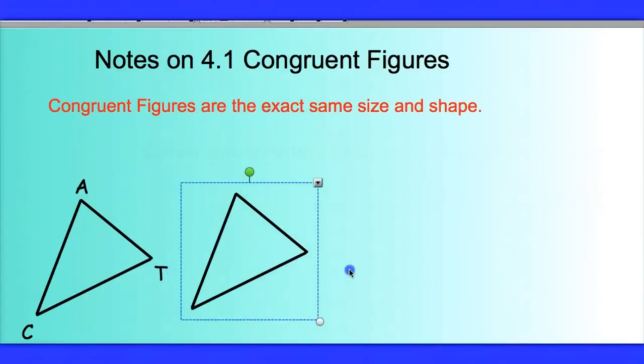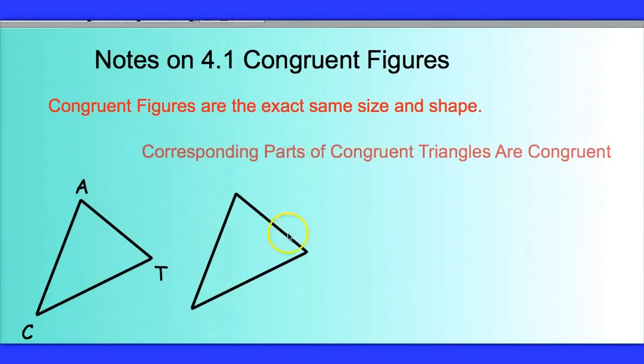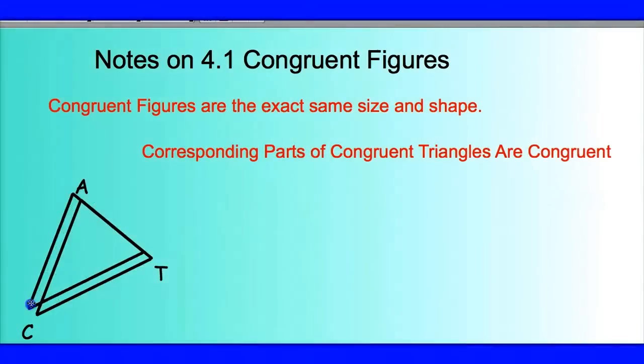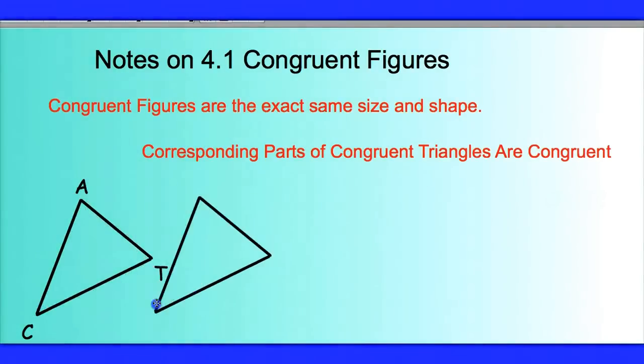So here right now I've got two triangles that are clearly congruent. And I know they're congruent because the corresponding parts here match up. We could see that angle C matches up with the bottom left angle here, and angle A matches up with the top angle of the triangle.